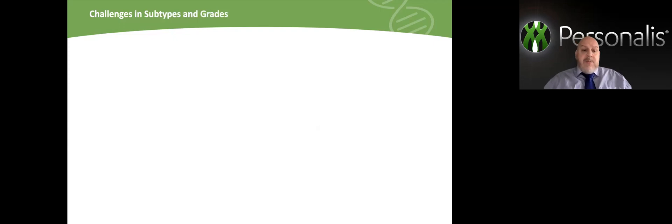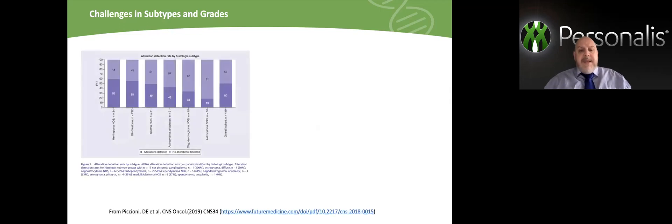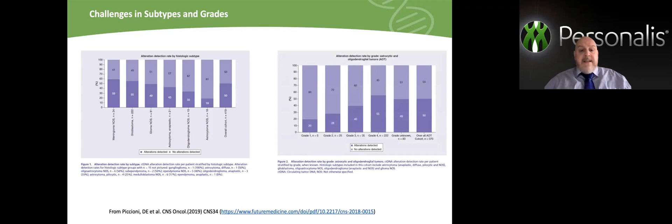Beyond the tumor type, other factors may add another dimension of unpredictability on the ctDNA content in the bloodstream. The subtype and the tumor grade may play an important role as well. This slide shows the different subtypes on the left side and grades on the right side of cancers of the brain.